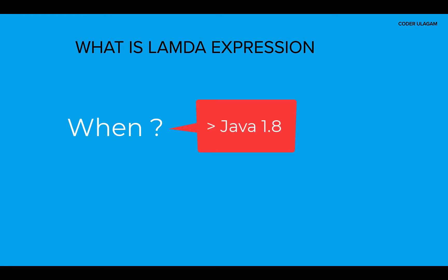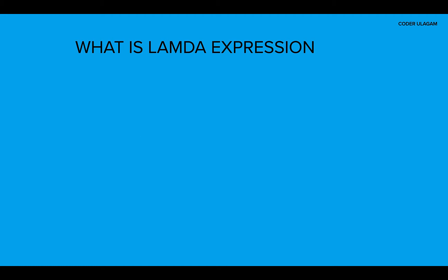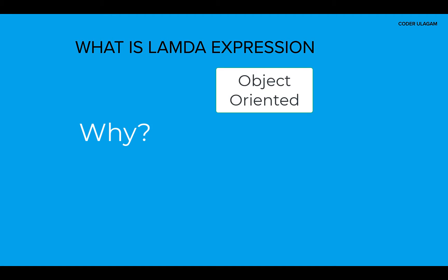Lambda was basically introduced as part of Java 8. Before that, we didn't have lambda expressions. The typical object-oriented programming of Java can solve the problems we have today, but by introducing lambda, it's a much more efficient way of solving the same problems.